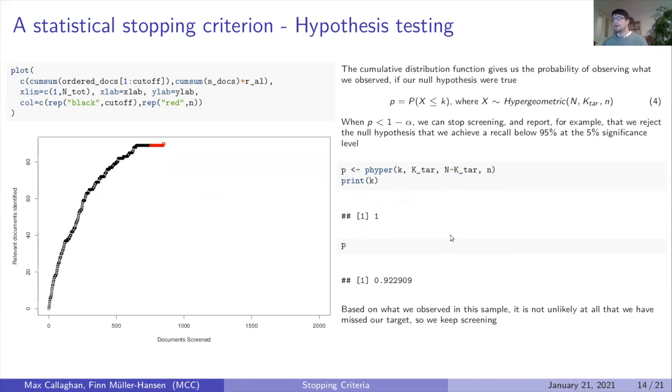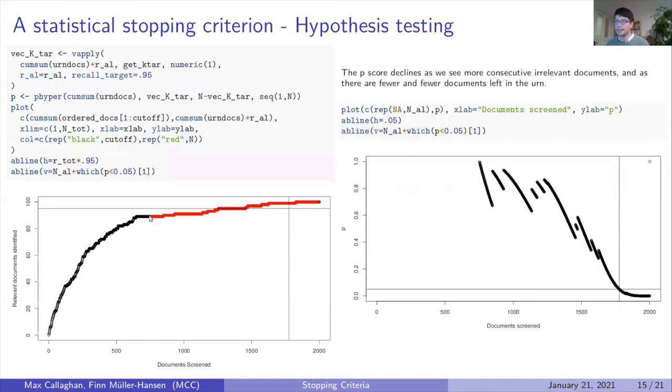We can calculate a p-score for this, and if this p-score is below our critical value, we can reject the null hypothesis and say it's safe to stop screening. We can calculate this at every point, and here are the p-values we get for each of these little red dots. You can see that at some point we reach where p is below 0.05, where we can reject the null hypothesis that we haven't achieved 95% recall. This is a little bit after the time when we actually achieve that target.